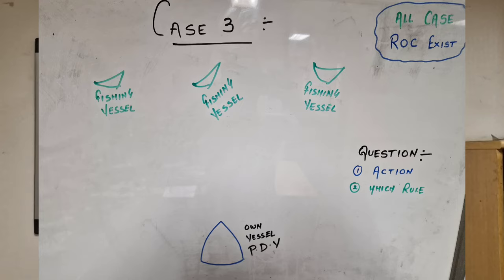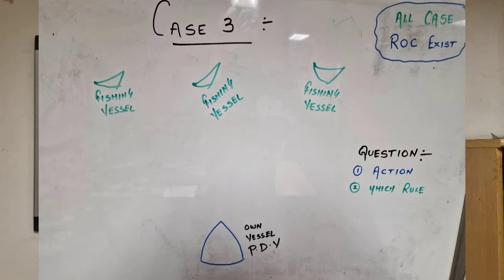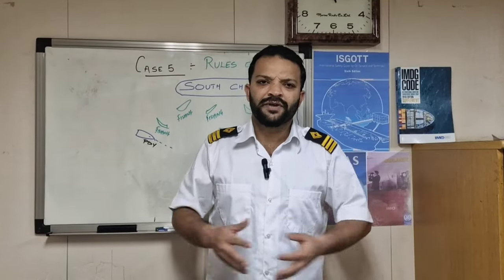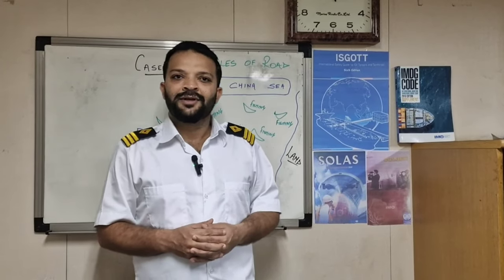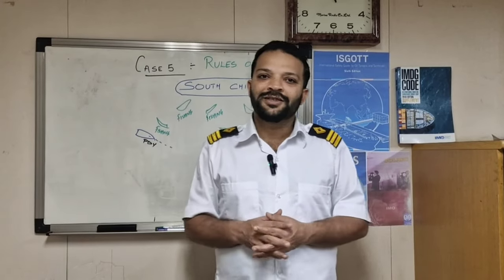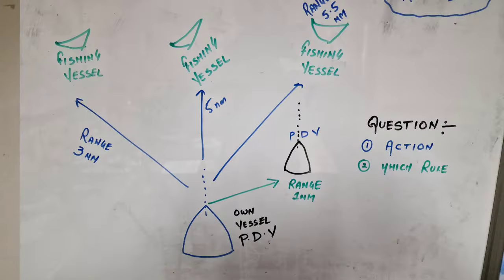Case number three: you have a bunch of fishing vessels right ahead — one point on the starboard side, one point on the port side. You are on a power driven vessel. All fishing vessels are four nautical miles from your vessel. What action will you take and as per which rule?